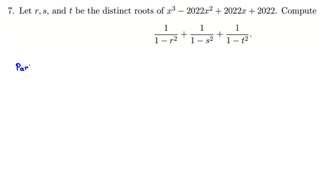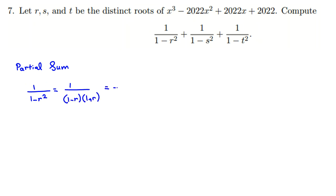Partial fraction decomposition — what is it? It's not hard. We want to find 1/(1−r²) + 1/(1−s²) + 1/(1−t²), where r, s, t are distinct roots of the given polynomial. We start by factoring: 1−r² = (1−r)(1+r). Then we can write 1/((1−r)(1+r)) as a combination of 1/(1−r) and 1/(1+r). Taking the common denominator gives (1+r) + (1−r) = 2, so the coefficient is 1/2.